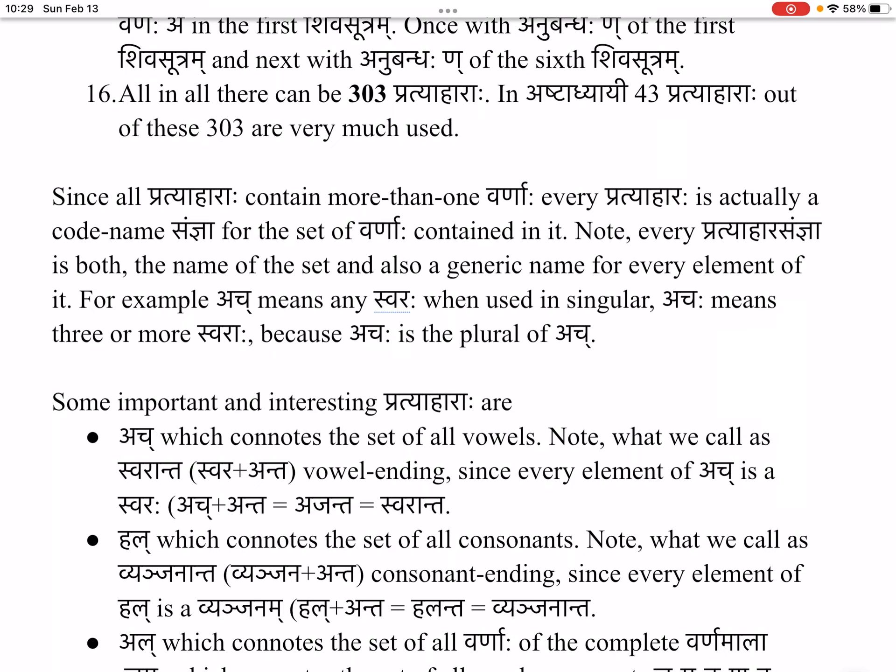Since all pratyahārāha contain more than one varṇa, every pratyahāra is actually a codename — saṃjñā — for the set of varṇāha contained in it. Note: every pratyahāra saṃjñā is both the name of the set and also a generic name for every element of it. For example, 'ac' means any svara when used in singular. 'Acaḥ' means three or more svarāha, because 'acaḥ' is the plural of 'ac'.